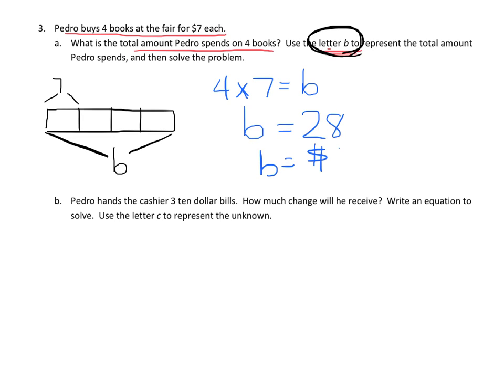So of course we know B is equal to 28, so ideally we ought to put B equals $28 like that. Honestly I struggle with knowing the difference between whether I should just put 28 or $28. There's some nuance that mathematicians kind of argue about, but here you go, that's good enough. So part B: Pedro hands the cashier three $10 bills. How much change will he receive? Write an equation to solve, and we're going to use C to represent our change, our unknown.